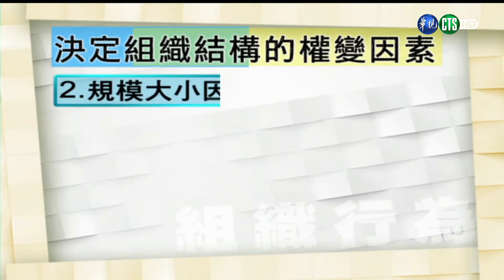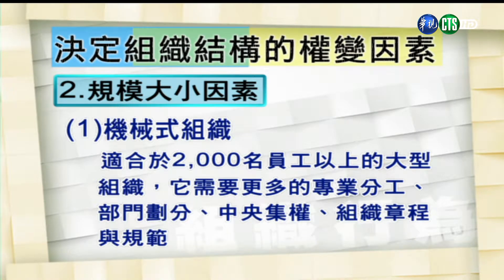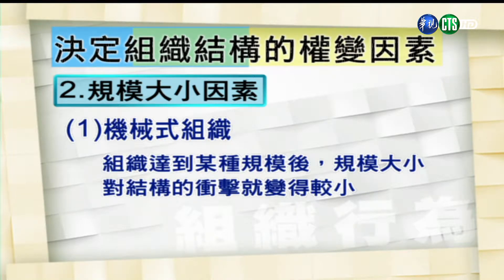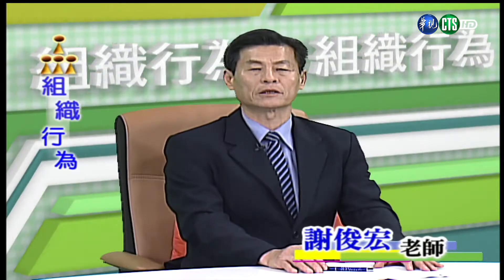第二项因素是规模大小。根据案例显示，机械式组织通常比较适合2000名员工以上的大型机构，因为大型组织比小型组织需要更多的专业分工、部门划分以及中央集权与规范。但当组织成长到某种规模以后，规模大小对结构的冲击就变得较小。